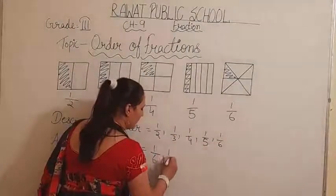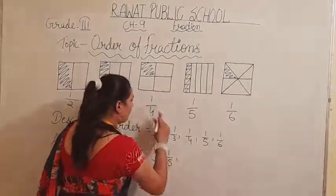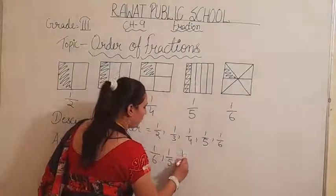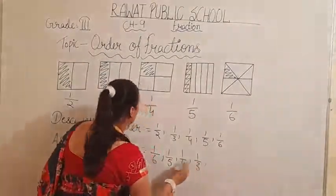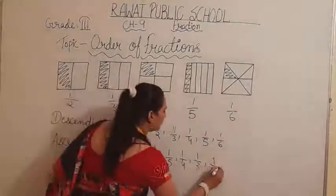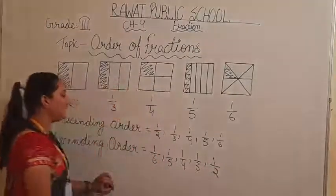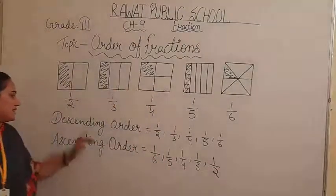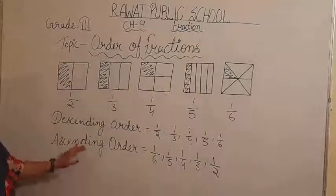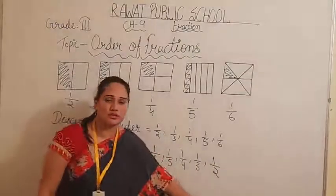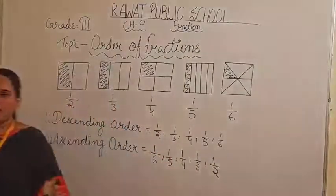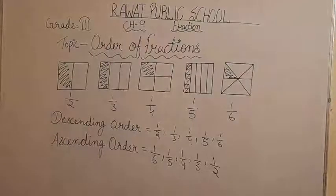And in ascending order we write: 1 by 6, 1 by 5, 1 by 4, 1 by 3, 1 by 2. This is the ascending order and descending order — smallest to biggest and biggest to smallest. Now I have one more example and then we have to do an exercise in this chapter.